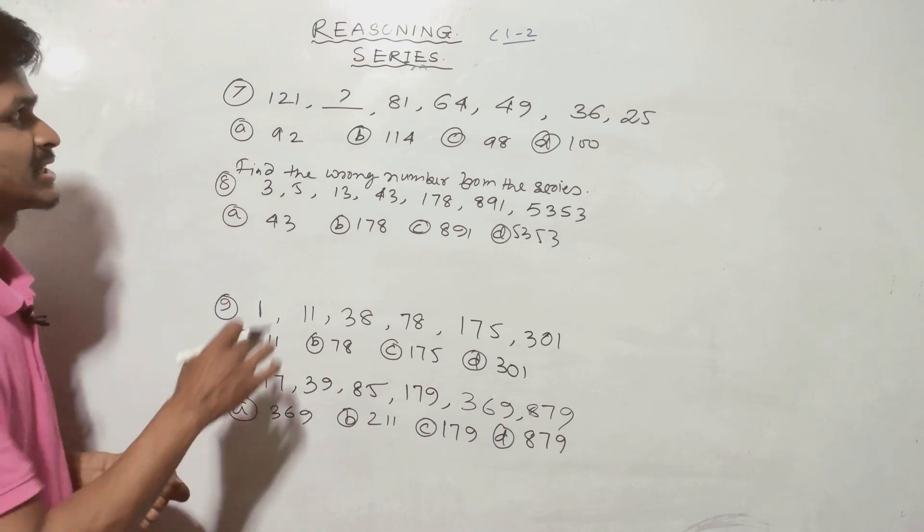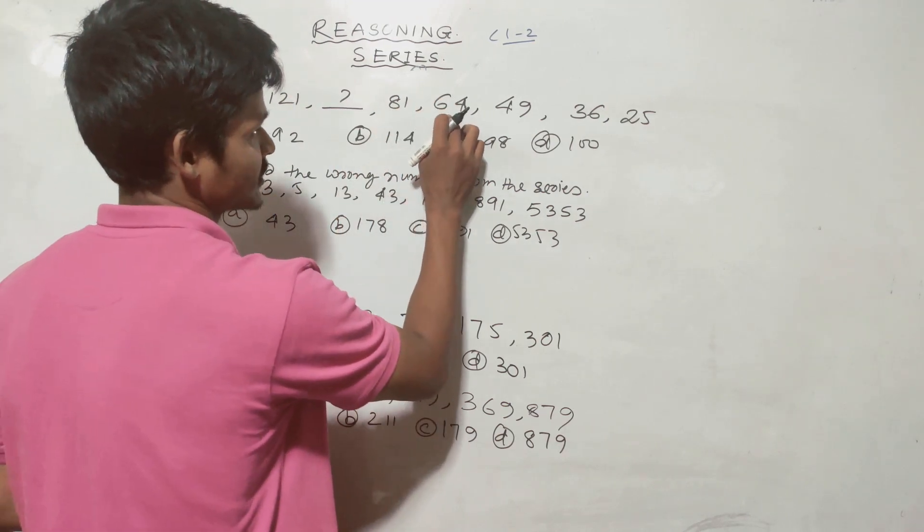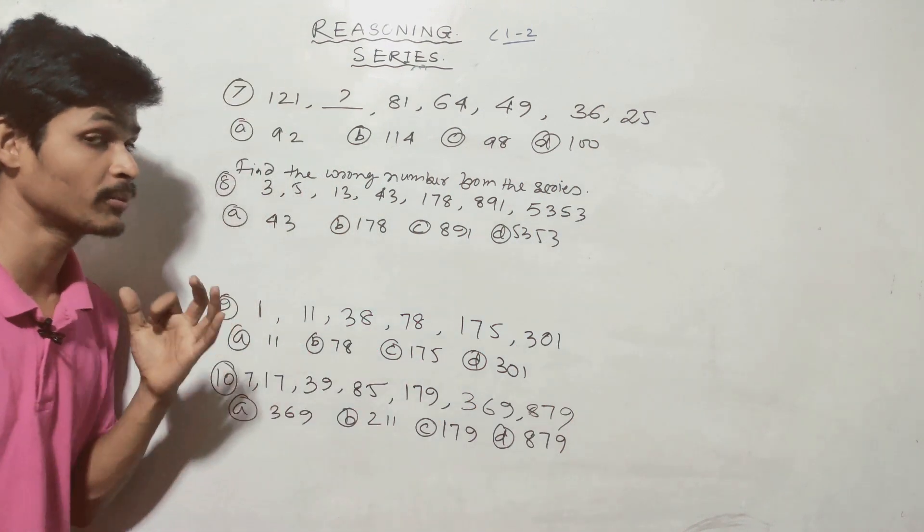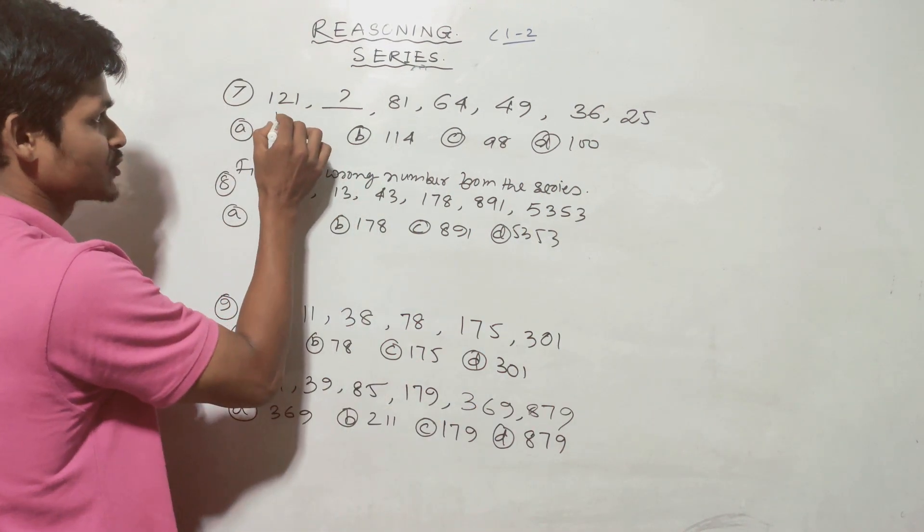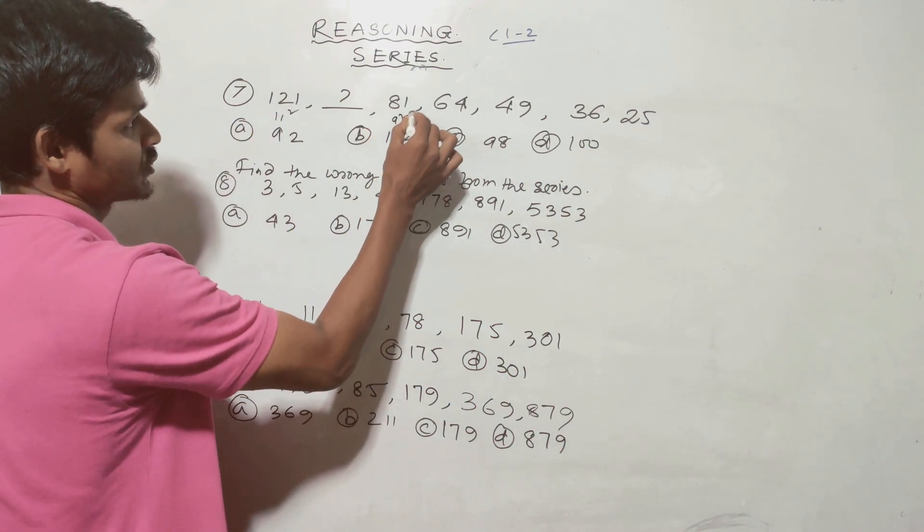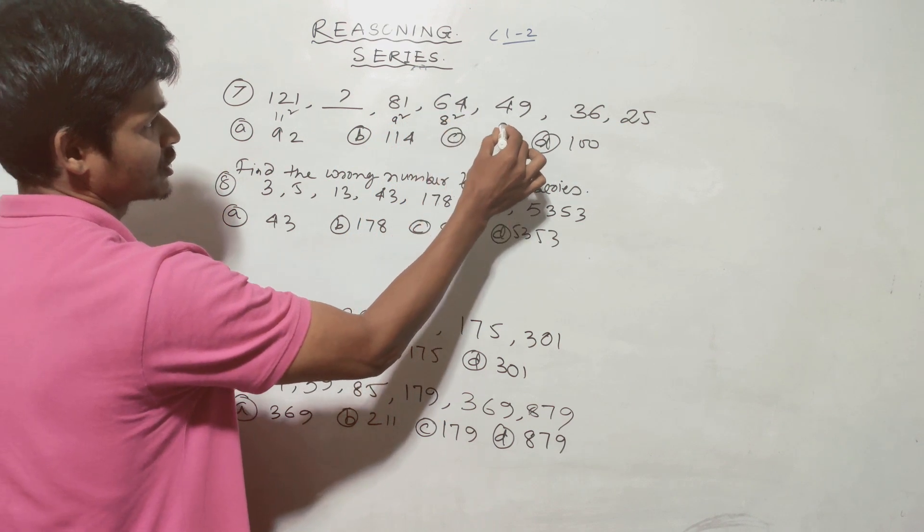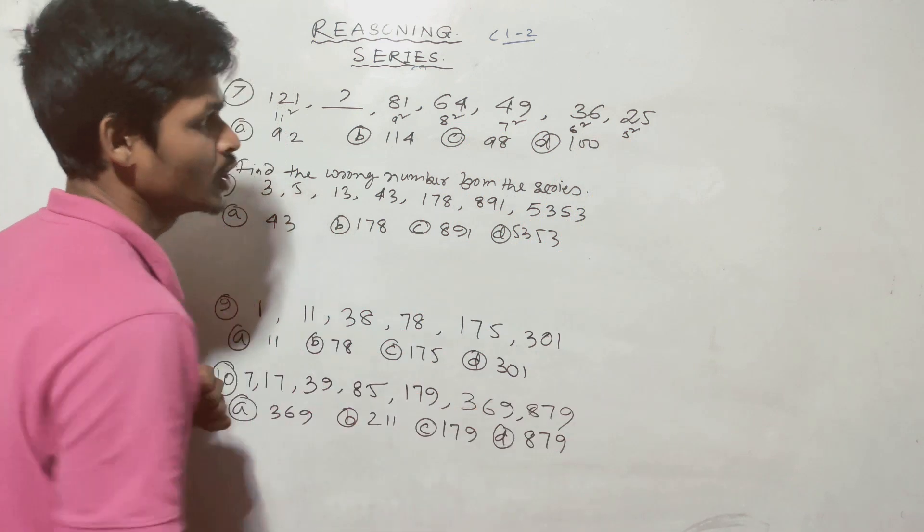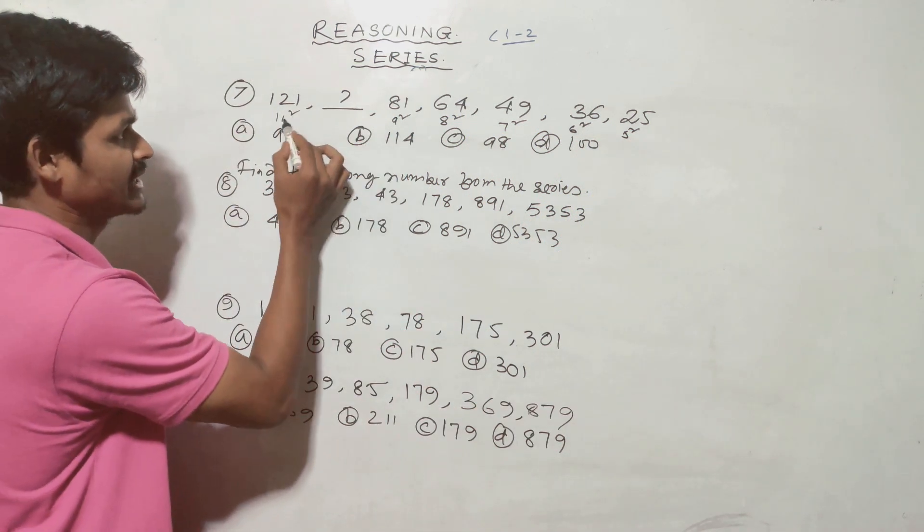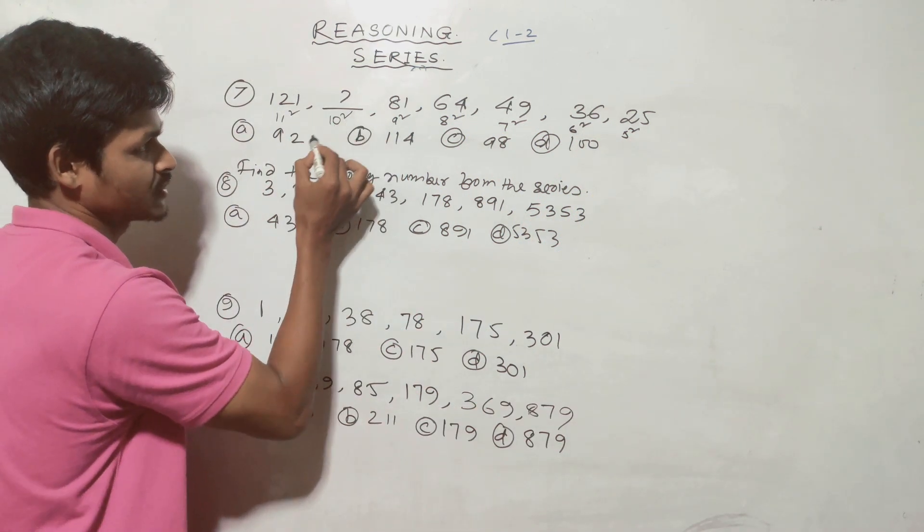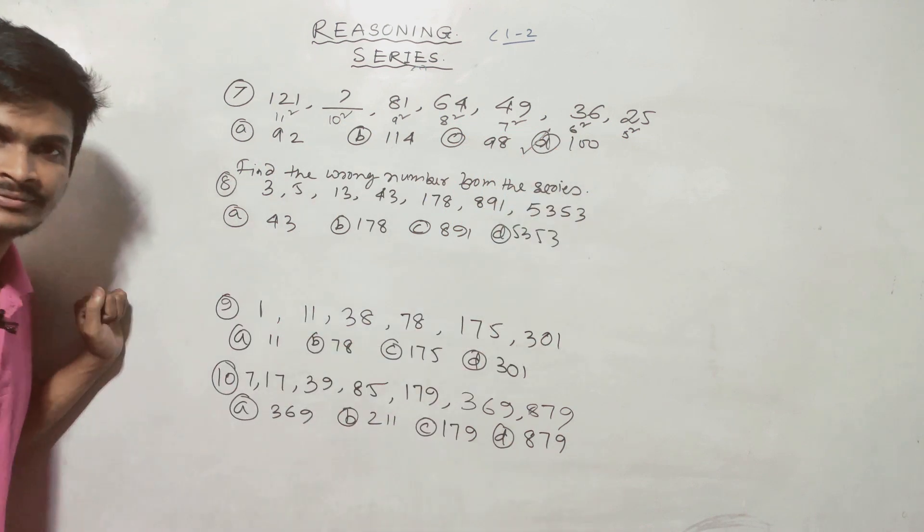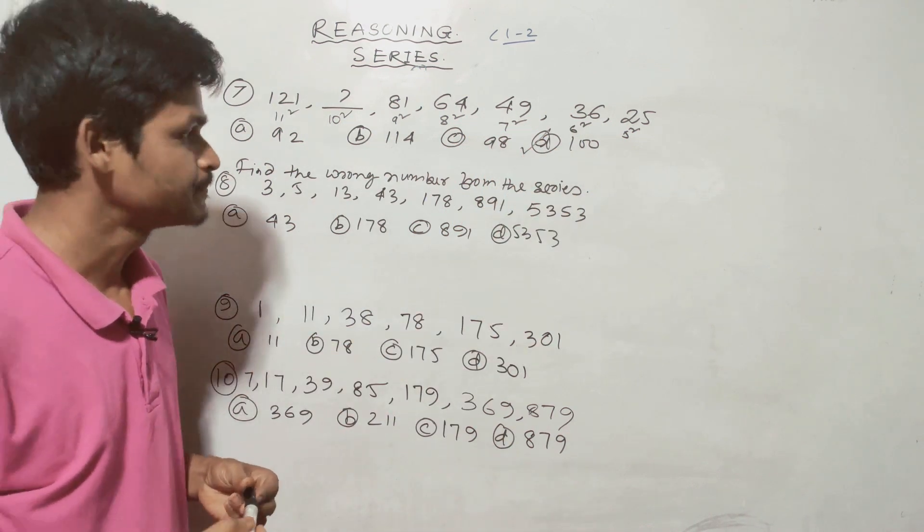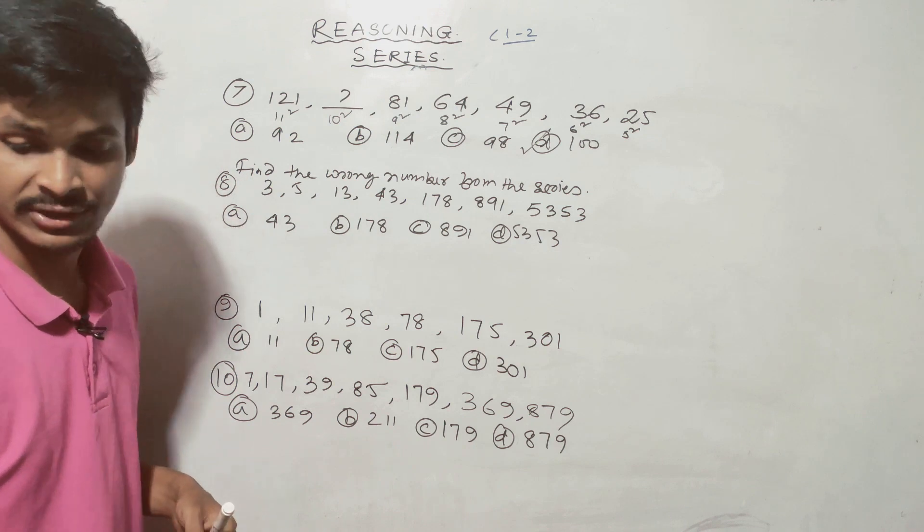Number 7: 121, 81, 64, 49, 36, 25. 11 square is 121, 9 square is 81, 8 square is 64, 7 square is 49, 6 square is 36, 5 square is 25. So between 11 and 9 is 10 square, which is 100. That's the answer.